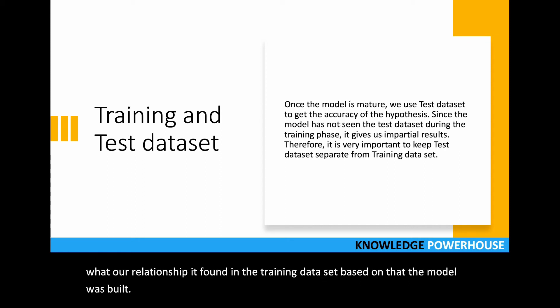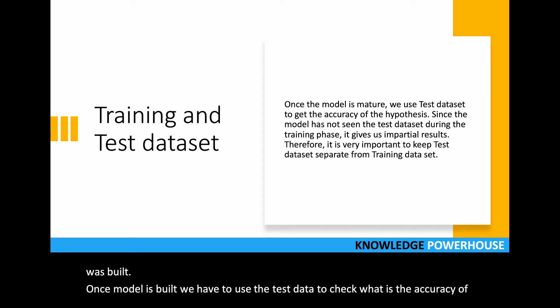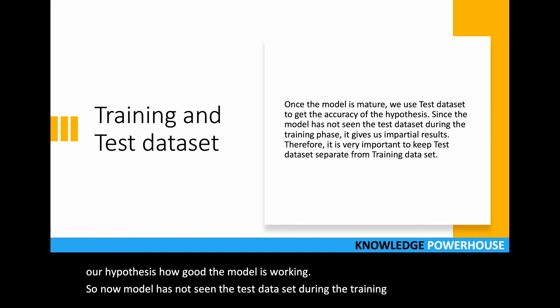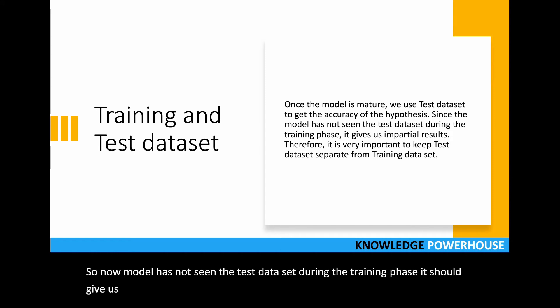Once the model is built, we have to use the test data to check the accuracy of our hypothesis, how good the model is working. The model has not seen the test dataset during the training phase, so it should give us impartial results. It should not be biased because if we use the same data for testing that we used to create the model, it will not be good. Using test data the model hasn't seen, we can see the accuracy. Therefore it's very important that we keep test dataset separate from training dataset.